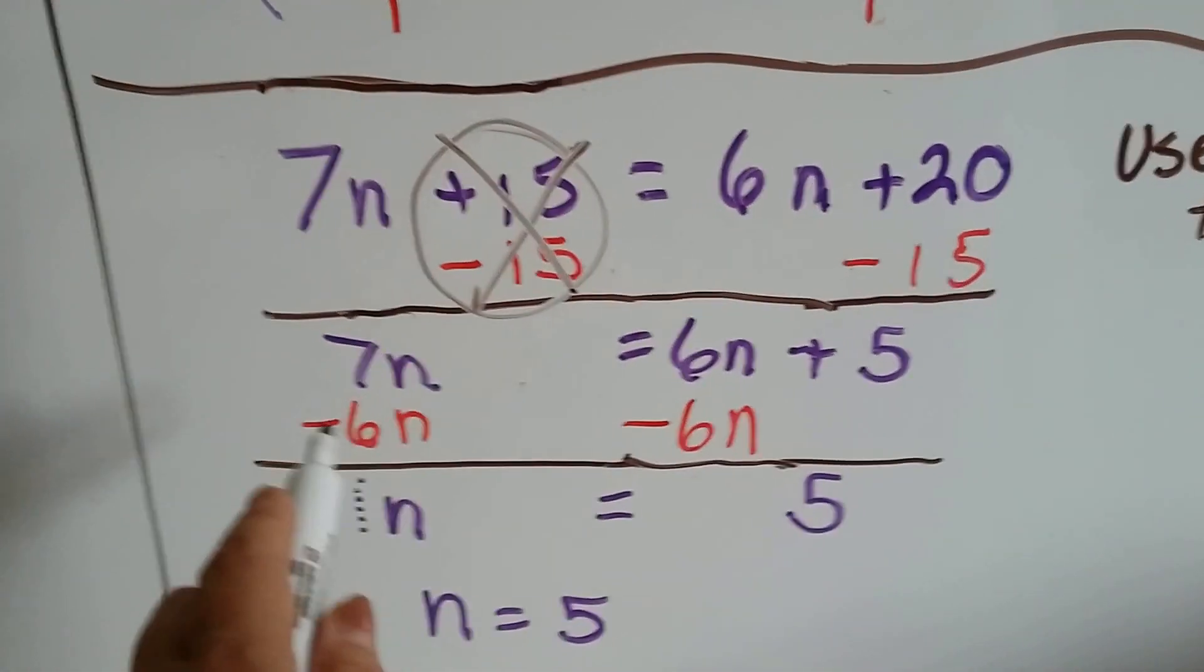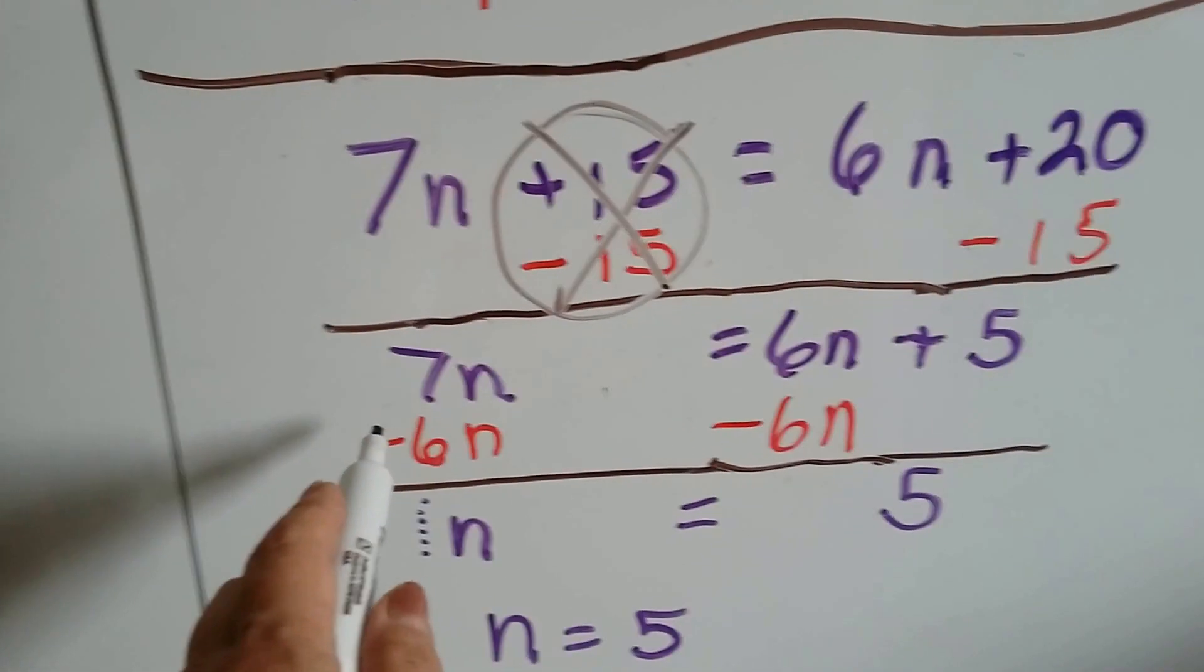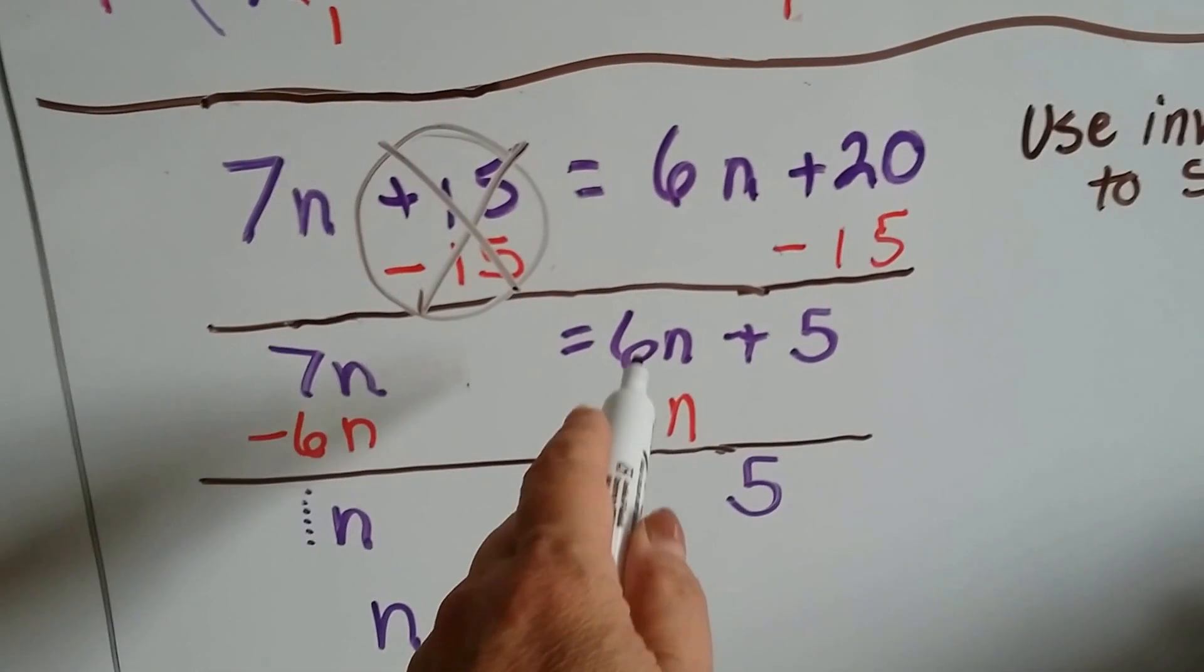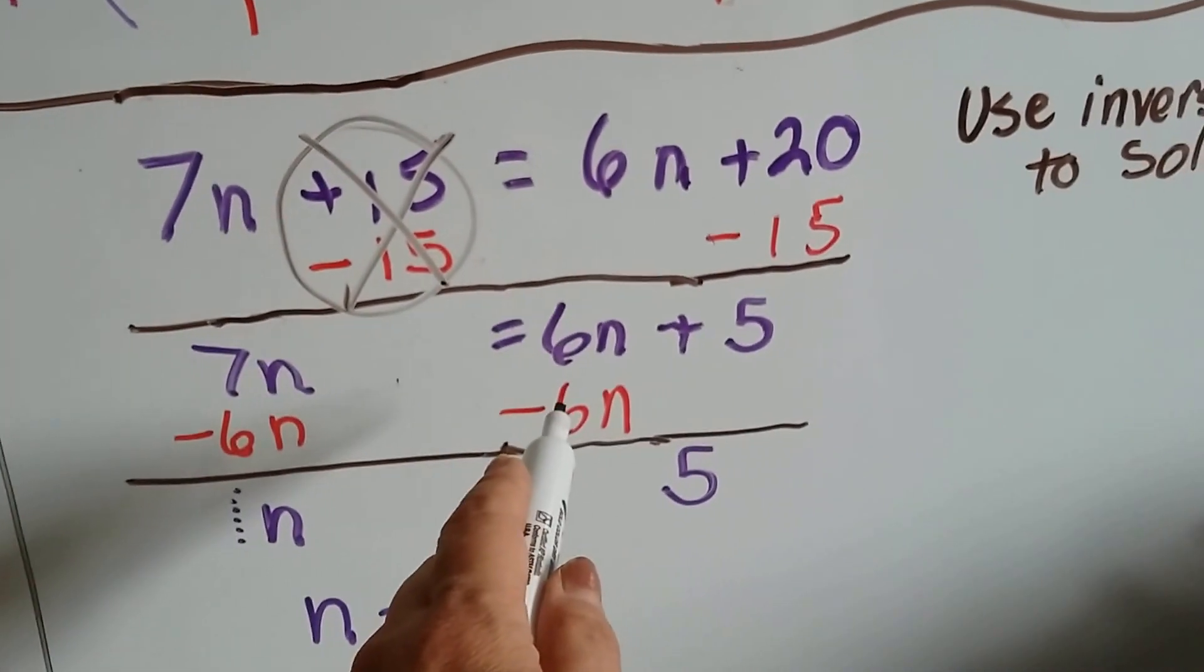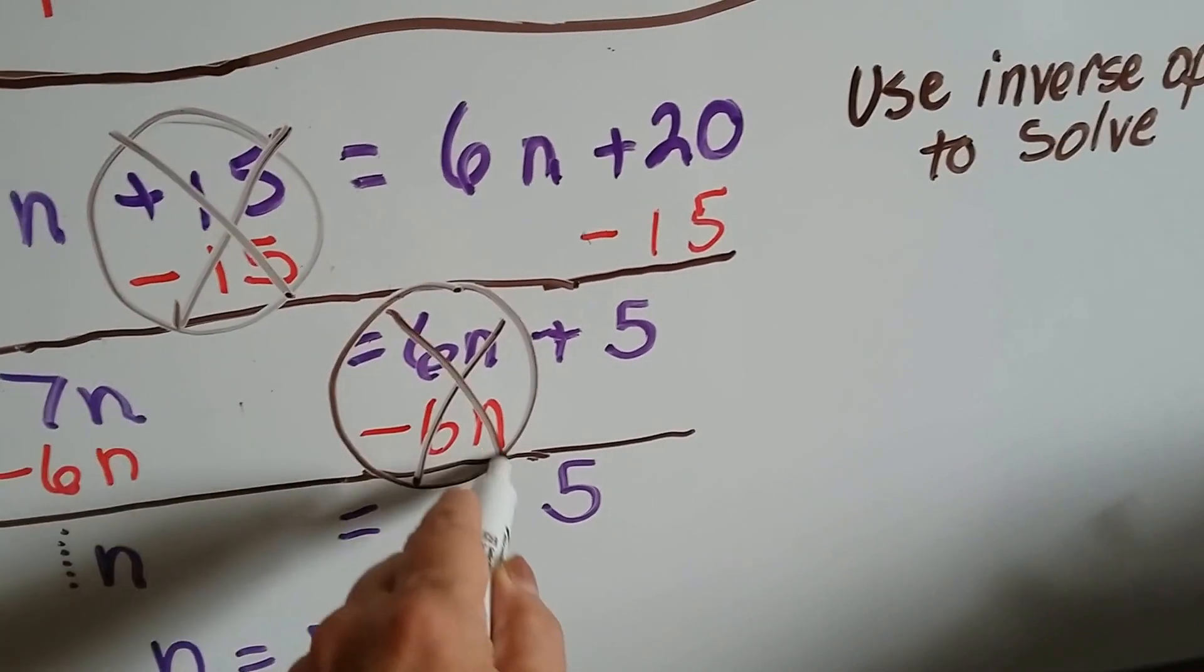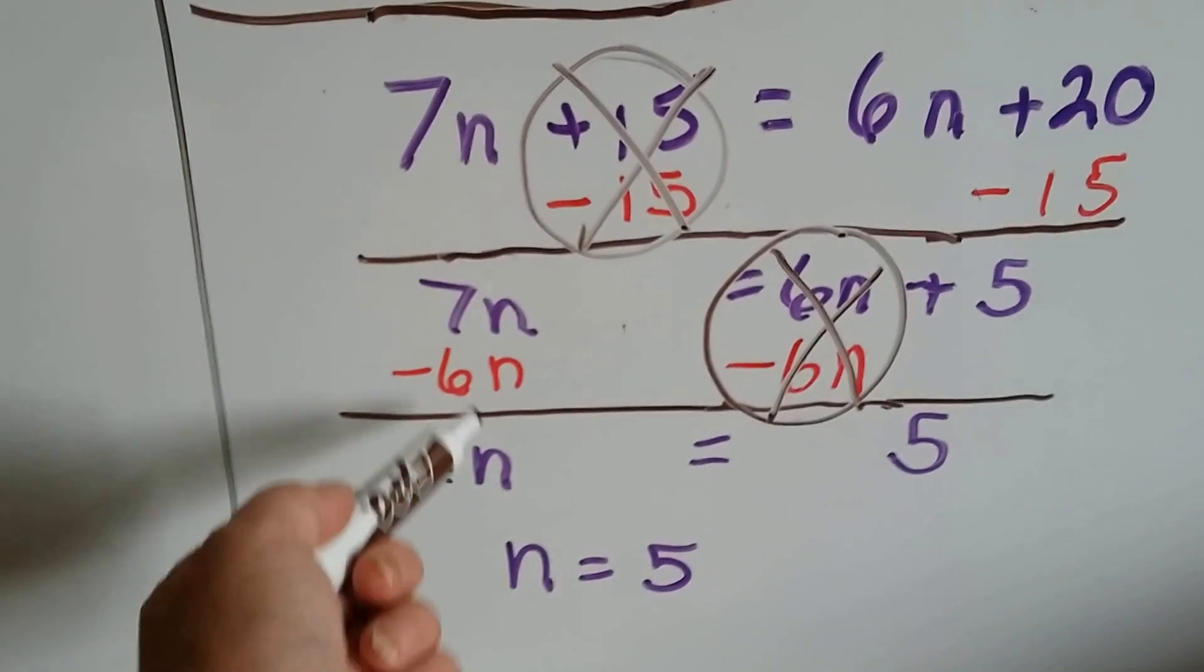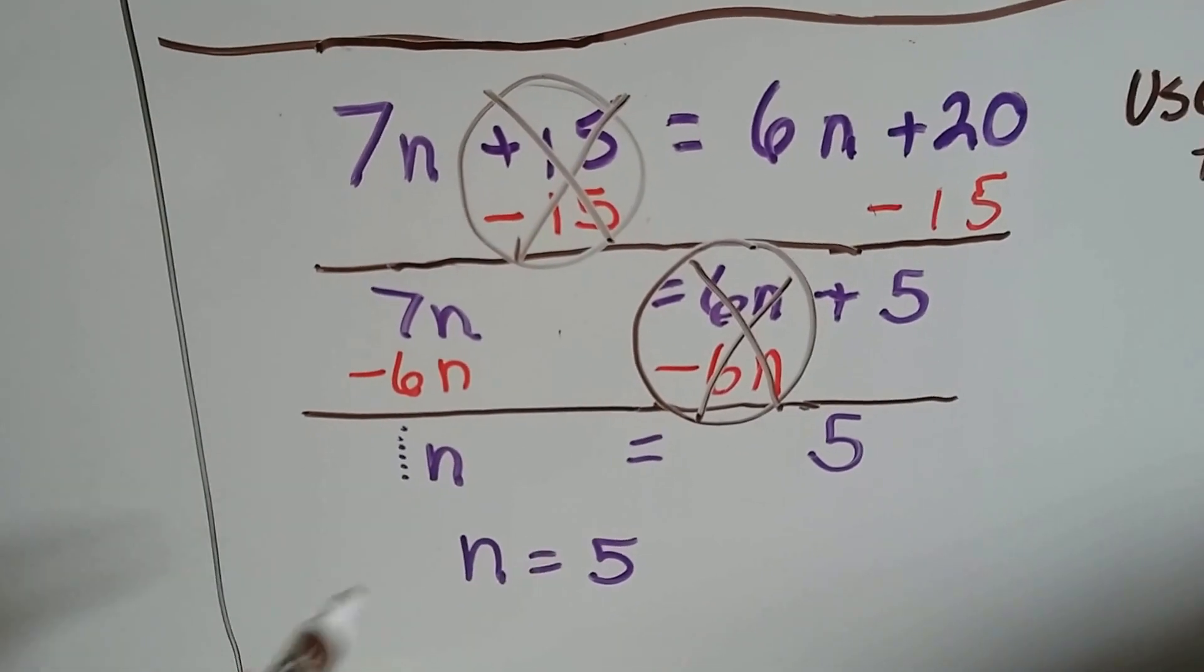Now let's see if we can get rid of these variables and isolate them to one side. There's already a variable term on this side by itself. So I'm going to subtract 6n from both sides. Positive take away negative 6 cancels itself out. And then 7n take away 6n leaves just an n. It's our invisible 1n friend. So now we have n equals 5.